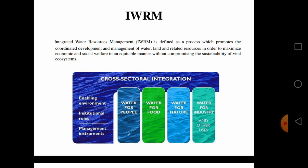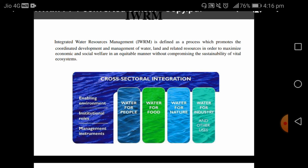Integration is with: enabling environment, institutional roles and management instruments. Integration means integrated water resource management, linking up with different authorities. It is water for people and water for food. Every person — we can consider they are facing the scarcity of water. If we are not having proper water, how is it linked up with food? How can we grow agriculture and vegetables? That is also important. Water for nature — that is linked with nature. And water for industry — industry also needs maximum water. So all are linked up with one another.